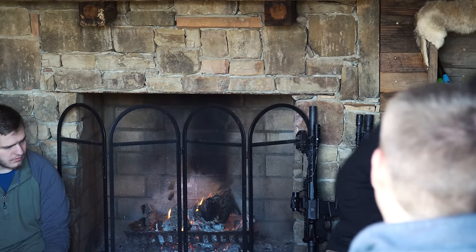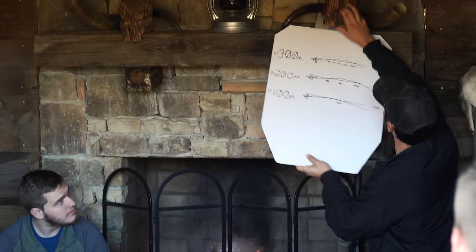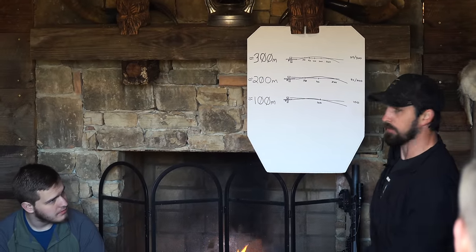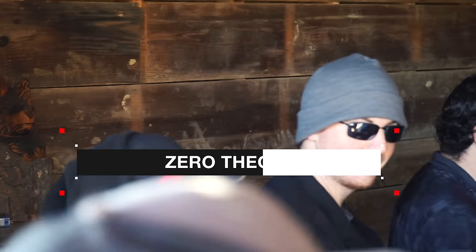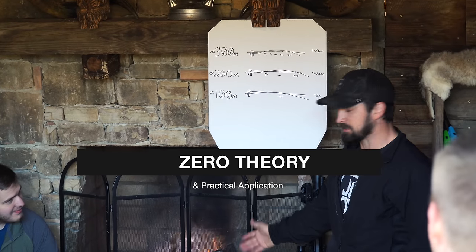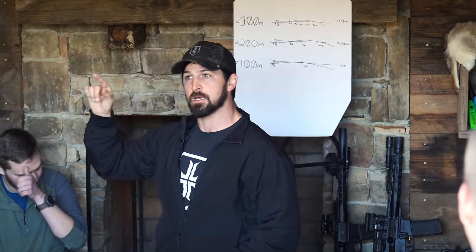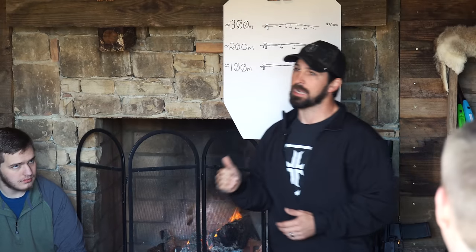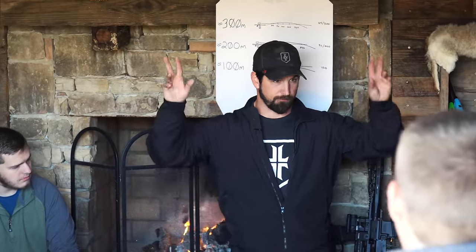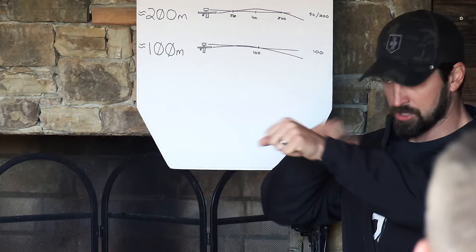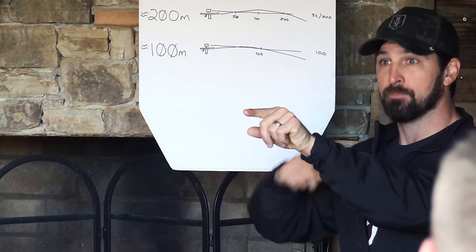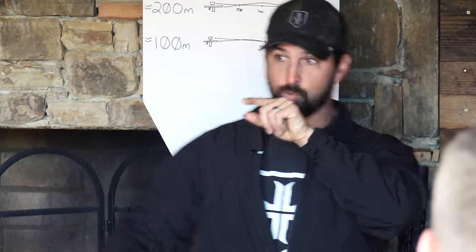We want to talk about zero theory, trajectory, ballistics, all that jazz. I have drawn out this diagram of different zero distances. Today we're going to be shooting at 50 meters on the line — that is not an actual 200 meter zero, it's an approximation; it's really a 50 meter zero. A zero is basically where your point of aim, as you're looking through your optic or sights, matches your point of impact. So what you're looking at — the dot or the reticle — your round impacts directly through that.